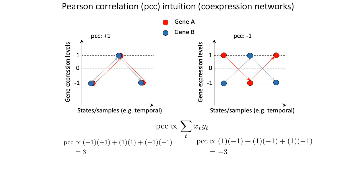The standard measure people use to capture correlation between a pair of genes is what's known as Pearson correlation. Pearson correlation is a number between negative one and one, where negative one means two genes are perfectly anti-correlated and one means they're perfectly correlated. The figure on the left shows what two genes look like with perfect Pearson correlation — they move exactly in sync. If two genes are perfectly anti-correlated with a Pearson correlation of negative one, when one goes up the other goes down and vice versa.